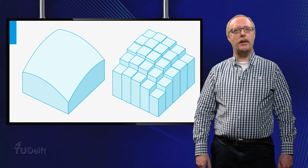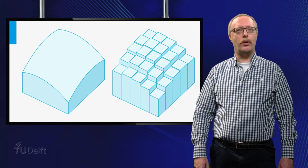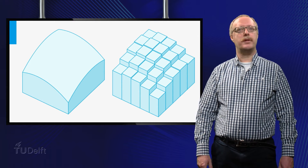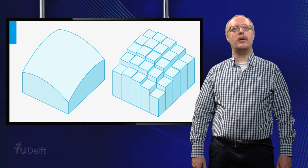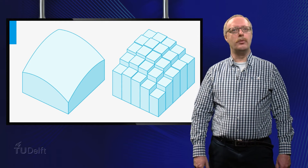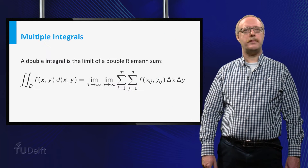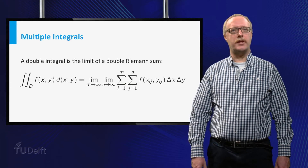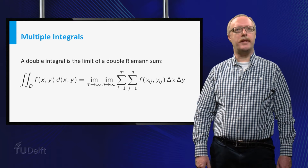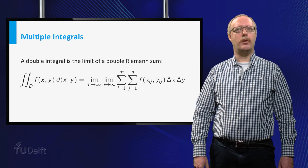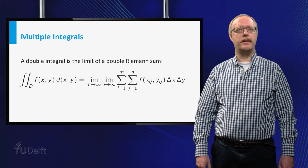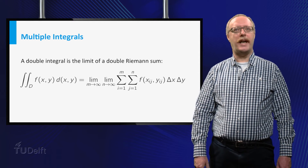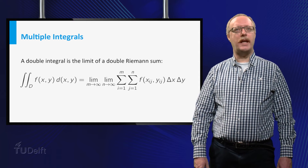In this way we get a number of boxes, and the volume of the building is approximated by the total volume of all these boxes. This is a Riemann sum for a function of two variables. If we now take the limit, such that the number of boxes tends to infinity, then we obtain the volume of the building. Here we define the so-called double integral of the function f that describes the shape of the roof.